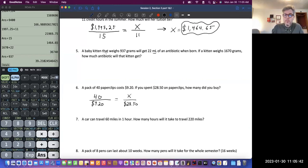So a baby kitten weighs 937 grams and they'll get 22 milliliters of antibiotic when born. First sentence is just information. There's no question. It's just pure information. If the kitten weighs 1,670 grams, how much antibiotic will the kitten get? So I realized, I'm solving for the amount of medicine. I know how much this kitten weighs. I'm solving for how much medicine.